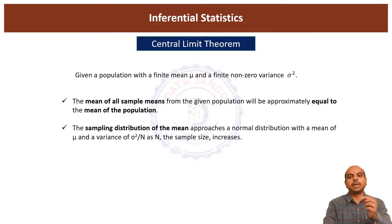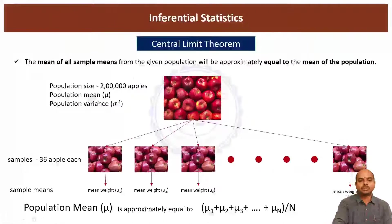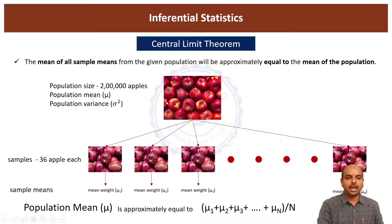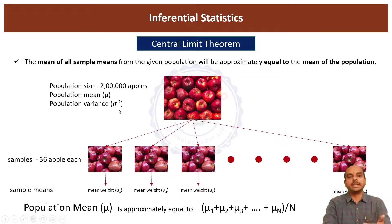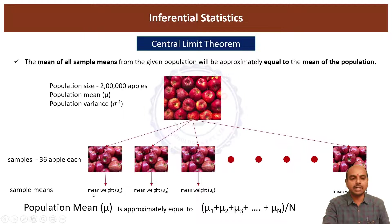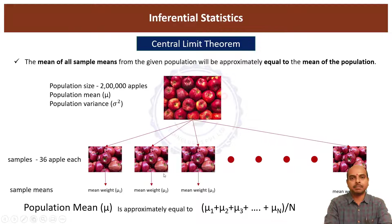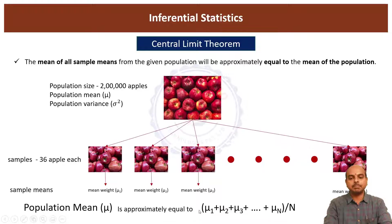Let us try to understand this concept with a simple example. Suppose there are 2 lakh apples with a population mean mu and a population variance sigma squared. Suppose I have taken many samples — maybe 1000, maybe 10,000 samples — each of size 36, and calculated the mean of each group of 36 apples. For the first sample the mean is mu1, second sample mu2, third sample mu3, and the Nth sample mean is mu_N. If you take the mean of all these means, that will be approximately equal to the population's mean.